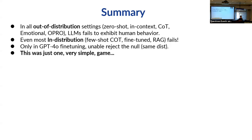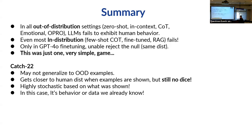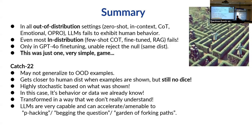This was a very simple game — Catch-22 here is that whatever you learn from LLMs may not generalize to unseen data. It gets closer to human distribution when examples are shown, but still no dice. And when we have enough data to do fine-tuning, we may actually have enough data to just get the insights ourselves. Whatever an LLM outputs is highly stochastic, and it's based on behavior or data we already have — transformed in a way we don't fully understand — which opens up a lot of p-hacking and garden-of-forking-paths issues.